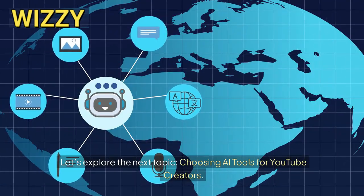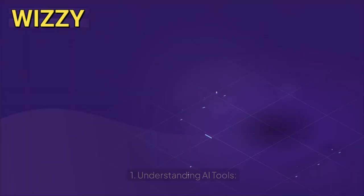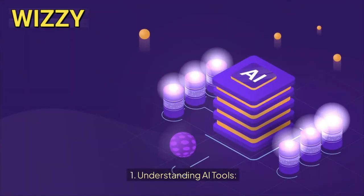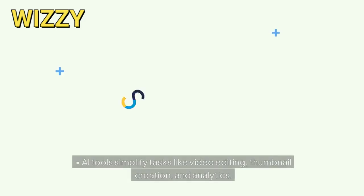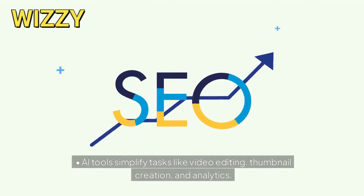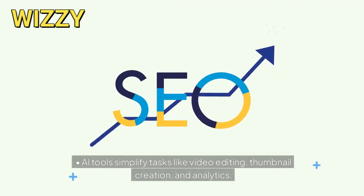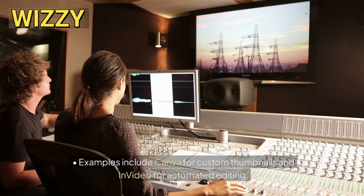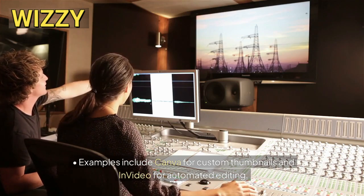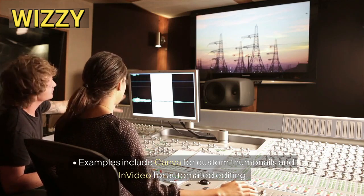Choosing AI tools for YouTube creators. Understanding AI tools: AI tools simplify tasks like video editing, thumbnail creation, and analytics. Examples include Canva for custom thumbnails and InVideo for automated editing. Explore user-friendly options that align with your content style.